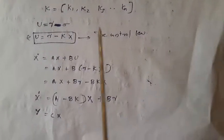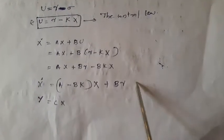This control law is applied to improve the performance of the system — that is, performance is improved by placing poles in the desired location. To place the poles in the desired location, we use the gain matrix K. Substituting U = R - Kx into the original state equation x-dot = Ax + Bu gives x-dot = Ax + B(R - Kx) = Ax + BR - BKx. The new state equation becomes x-dot = (A - BK)x + BR, where the original system matrix A changes to A - BK.